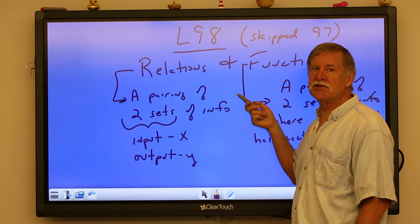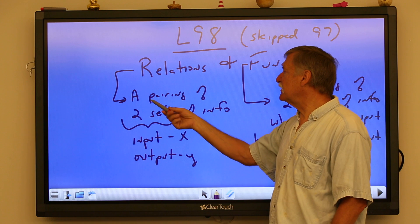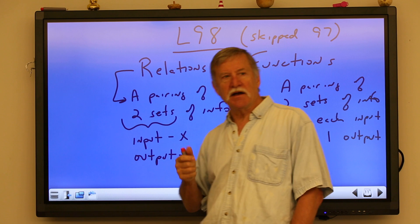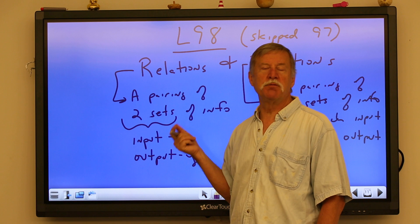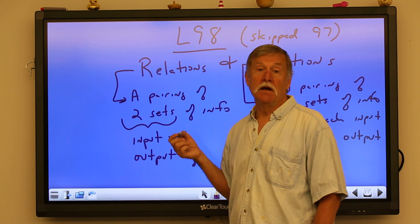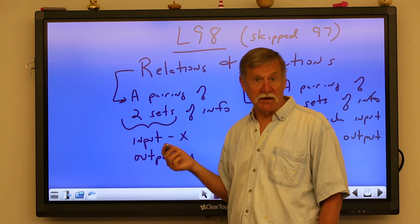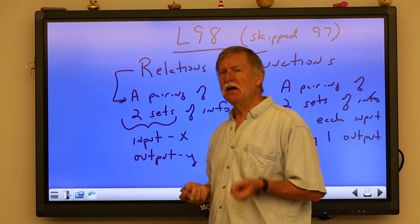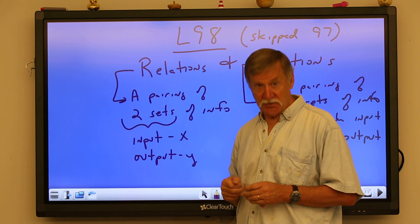All functions are relations, but not all relations are functions. Very simply, a relation is any pairing of two sets of information. That could be something like your jersey number on your basketball team paired with the number of points you make in a game — two things connected together. It could be a name and a telephone number. As long as it's two sets where one thing goes with another, it's a relation.